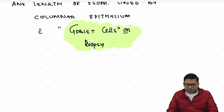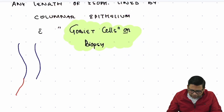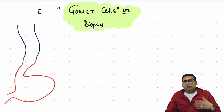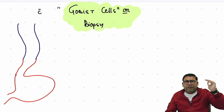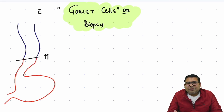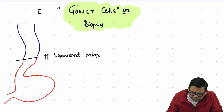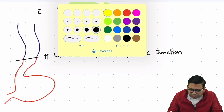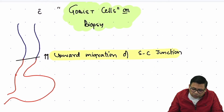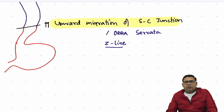In a layman's language, the squamous epithelium is predominant and then we have columnar epithelium. There is something known as the squamo-columnar junction, which is normally roughly one to two centimeters above the GE junction. In Barrett's, what we classically see on upper GI endoscopy is upward migration of the squamo-columnar junction — also called upward migration of the ora serrata or Z-line, which is the squamo-epithelial junction line.